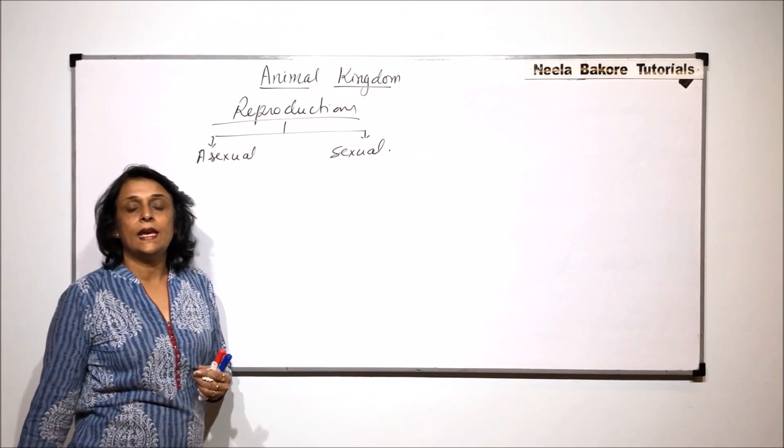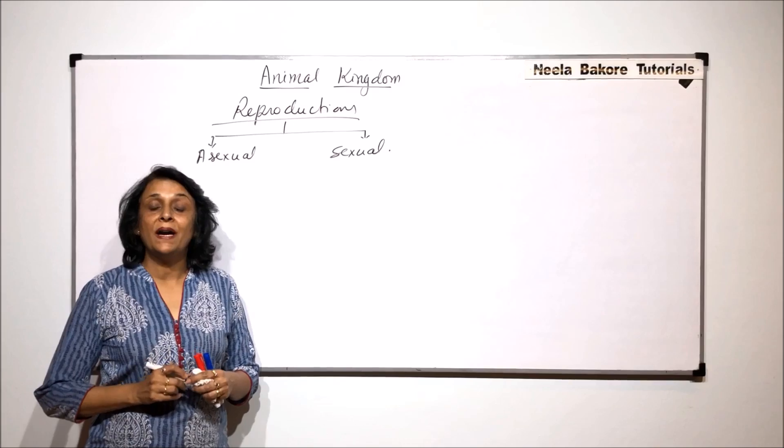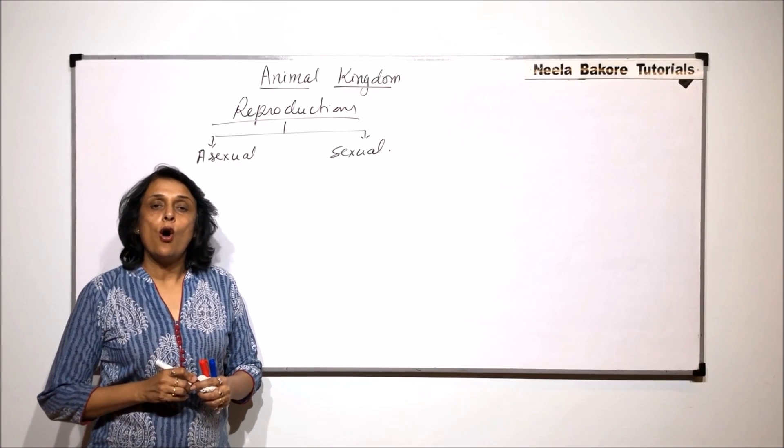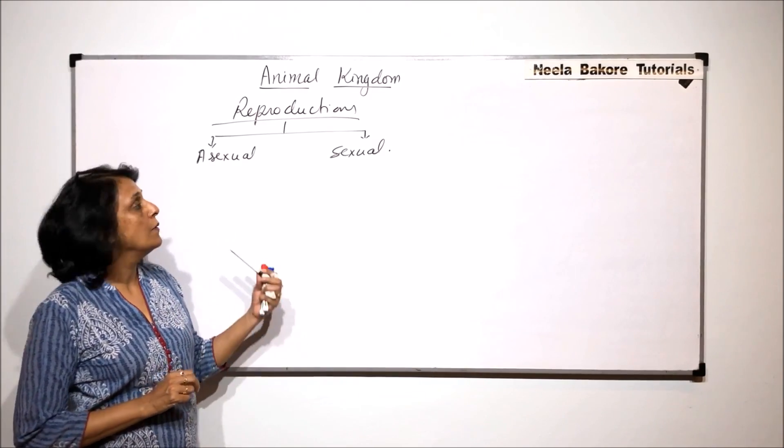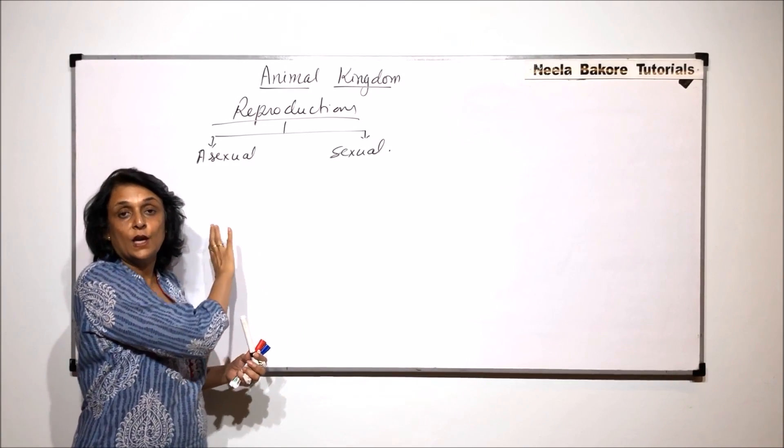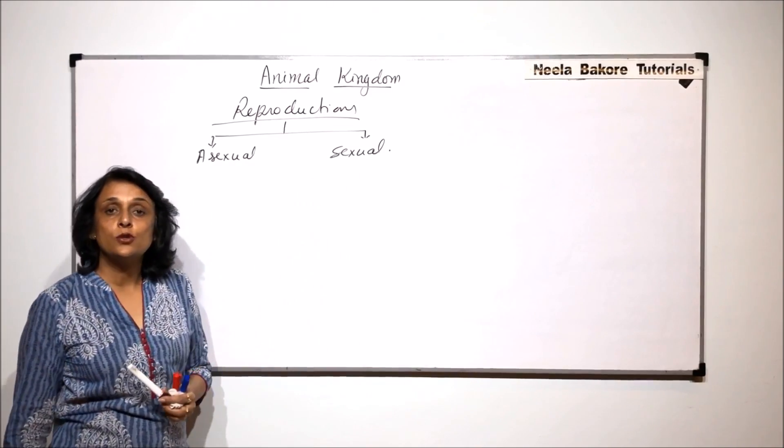When asexual reproduction takes place, it can be in the form of budding, fission, or even some special type of spore formation which is again a very rare thing. But in case of animals, the main method is sexual reproduction.